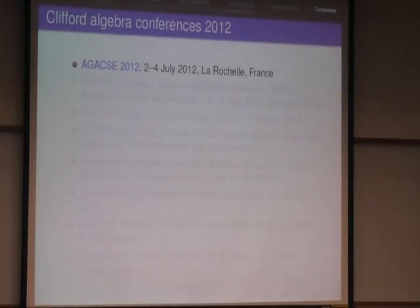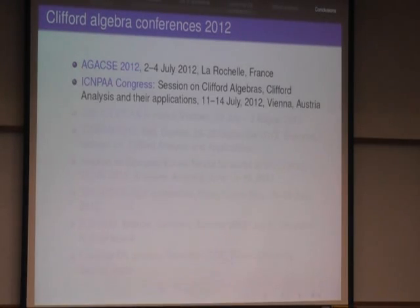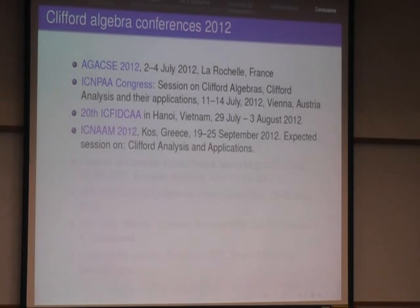And this year, there will be a range of conferences, one which I recommend very much, Applied Geometric Algebra in Computer Science and Engineering, which will be in France this year. Then there will be a congress in Vienna, which has a session on Clifford algebra and Clifford analysis. Then there will be a conference in Vietnam, in Hanoi, in summer. And there will be a conference in Greece, on a Greek island, in a tourist resort. And it has a session Clifford analysis and applications.